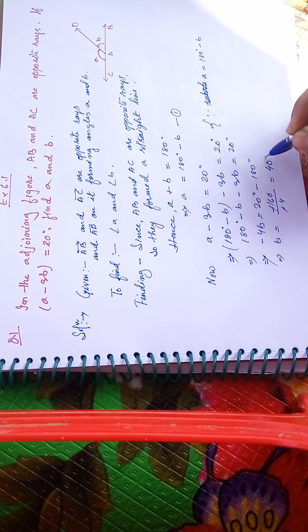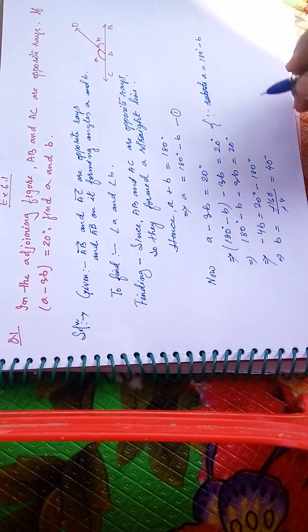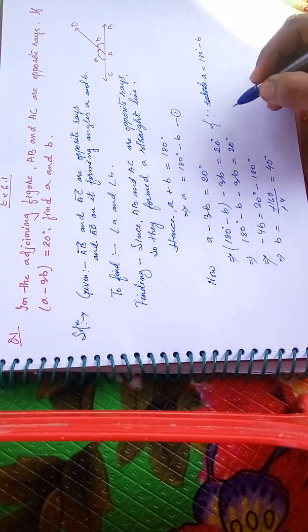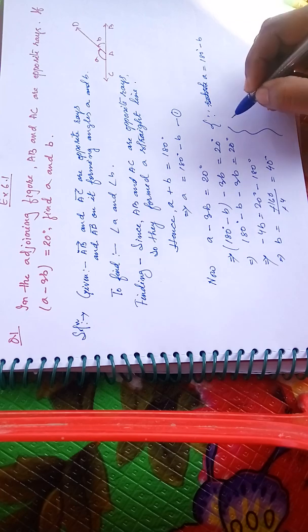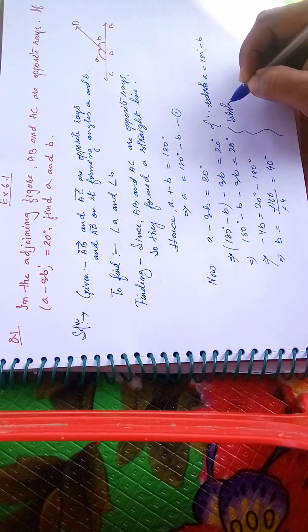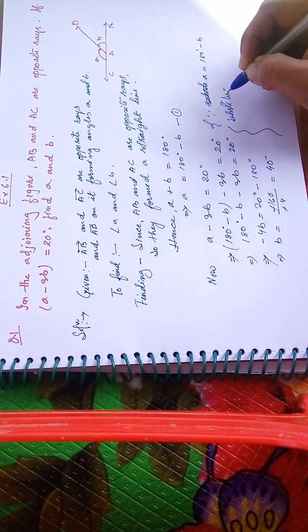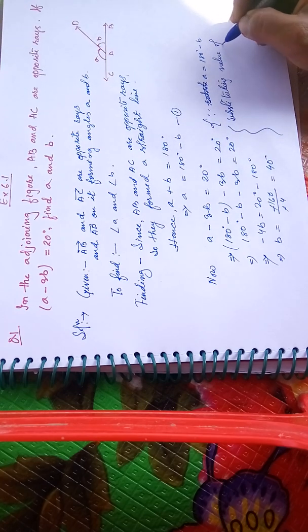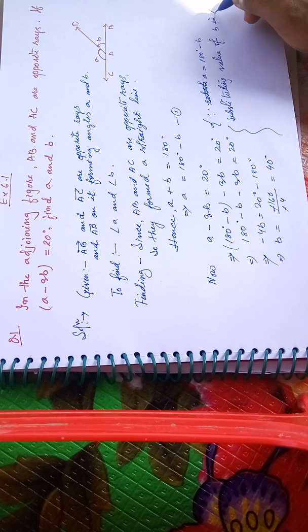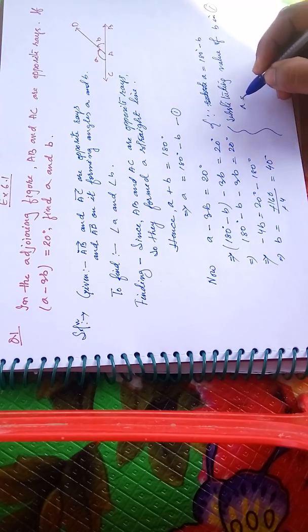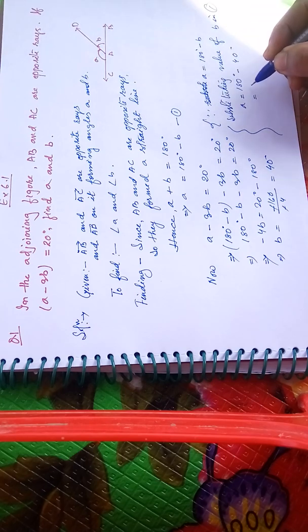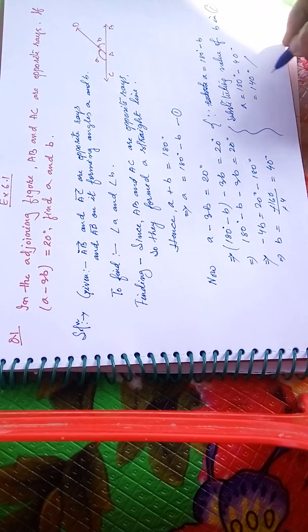Substituting the value of B in equation one: A equals 180 degrees minus 40 degrees, which gives us A equals 140 degrees.